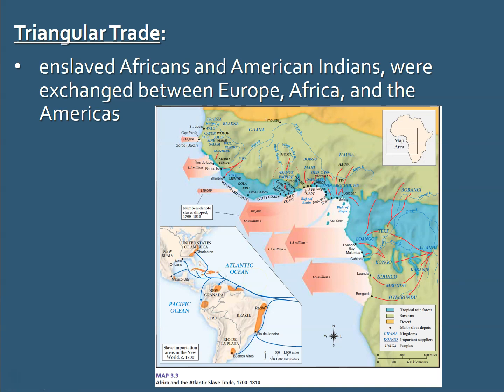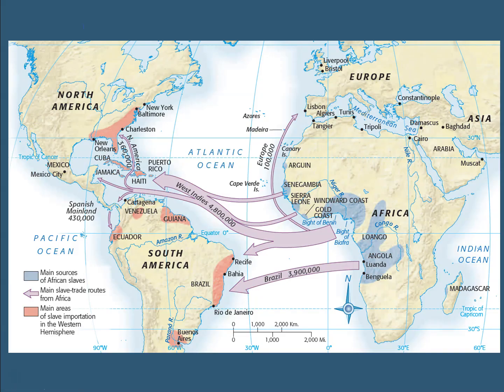One of those legs is called the Middle Passage, where enslaved Africans and also American Indians were exchanged between Europe, Africa, and the Americas. The topic of African slavery in American history is a very big and important topic. We've looked at some early foundations in a previous video, but this is where most of the African slaves came from and where most of them would go.